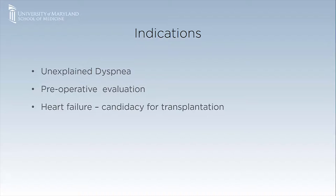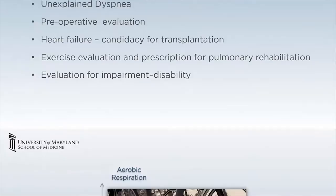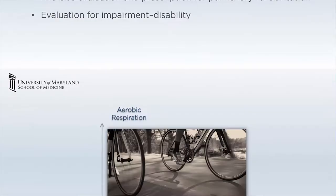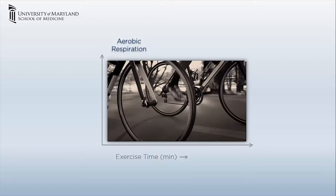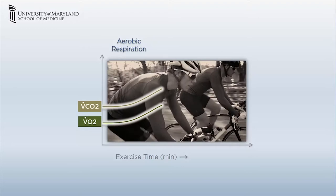Now we are going to discuss the physiological changes during exercise. Changes occur in three phases. When we start exercising in the first phase of aerobic respiration, oxygen consumption increases, carbon dioxide production increases proportionately, and minute ventilation also increases proportionately to keep up with these changes. As a result, PaCO2 remains normal.